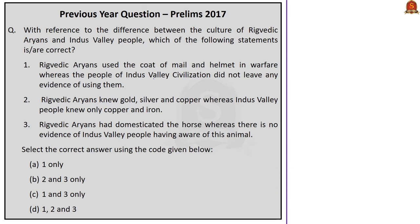The second question was asked in the 2017 prelims: with reference to the difference between the culture of Rig Vedic Aryans and Indus Valley people, which of the following statements is or are correct? First statement: Rig Vedic Aryans used the coat of mail and helmet in warfare whereas the people of Indus Valley civilization did not leave any evidence of using them. Second statement: Rig Vedic Aryans knew gold, silver and copper whereas Indus Valley people knew only copper and iron. Third statement: Rig Vedic Aryans had domesticated the horse whereas there is no evidence of Indus Valley people having been aware of this animal. Options: A) one only; B) two and three only; C) one and three only; D) one, two, three.